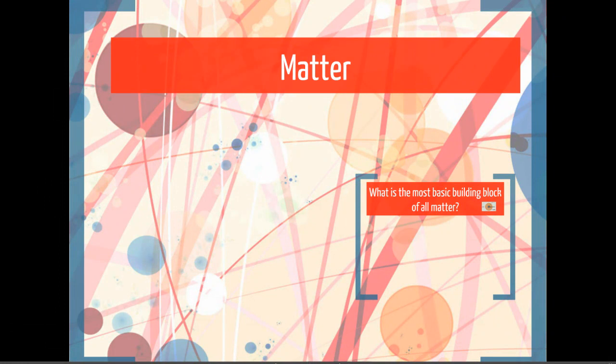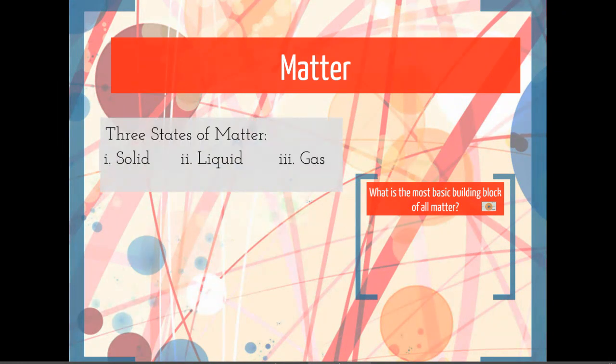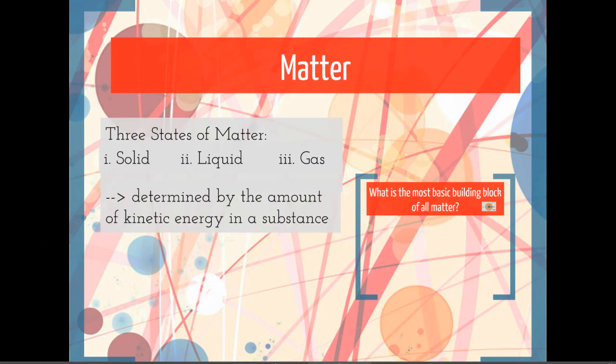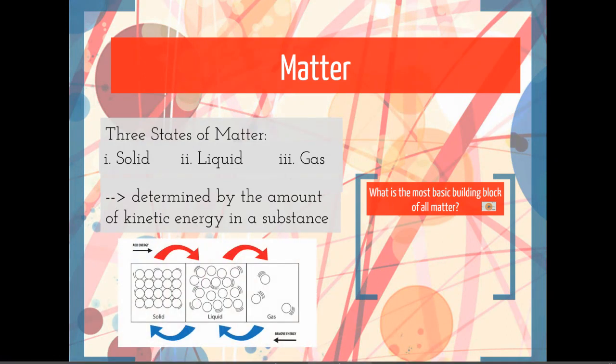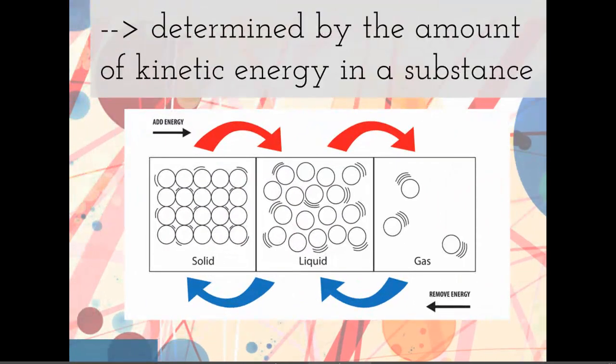When we look at matter, there are three states of matter: solid, liquid, and gas. But I want to connect this back to this idea of kinetic energy, the energy of movement. What determines what state matter is in is the amount of kinetic energy that it has. And I think this little picture is a good illustration. If you are solid, you have molecules that are moving, vibrating a little bit, but they generally stay in place.